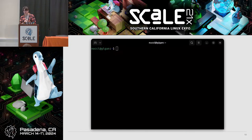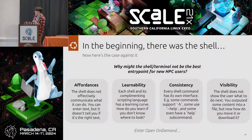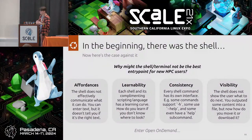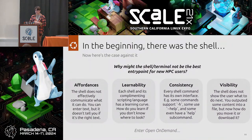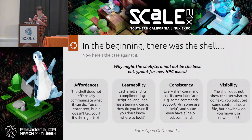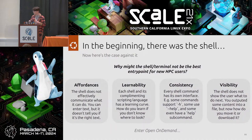The problem is: in the beginning, there was the shell. So here's the case against it. Why might the shell or terminal not be the best entry point for new HPC users? First, think about affordances — a device telling you it's capable of doing something, like a steering wheel or gas pedal. When you go into the terminal, it tells you that you can type something, but not what to type, how to type it efficiently, or how to do anything correctly.